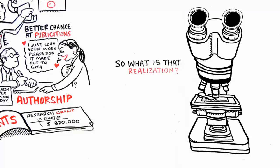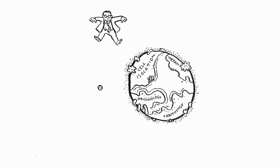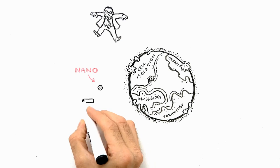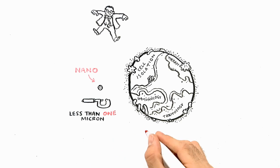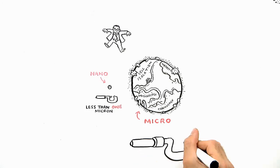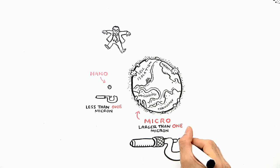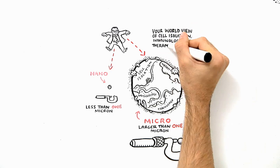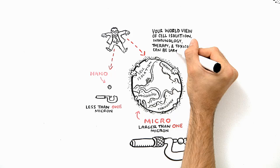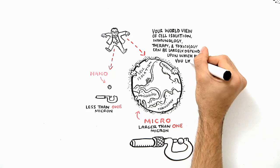So what's this realization? It's not that there is just one, but two worlds of technology when it comes to cell isolation. Two different planets. There is a nano-sized planet where particles we use are usually less than 1 micron, and there is a micro-sized planet where the particles we use are larger than 1 micron. Your view of cell isolation, immunology, therapy, and toxicology can be largely dependent on which planet you live on.